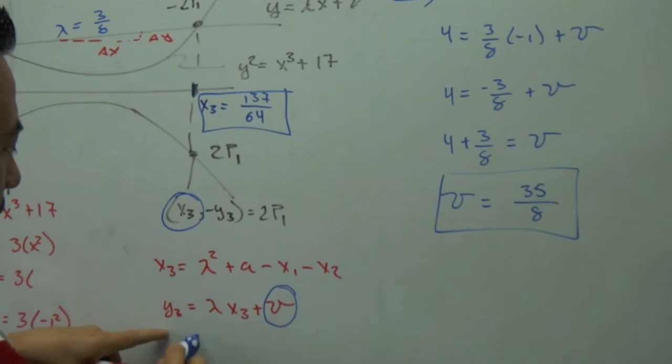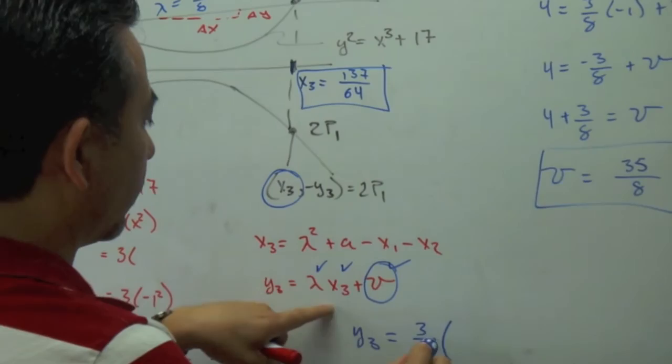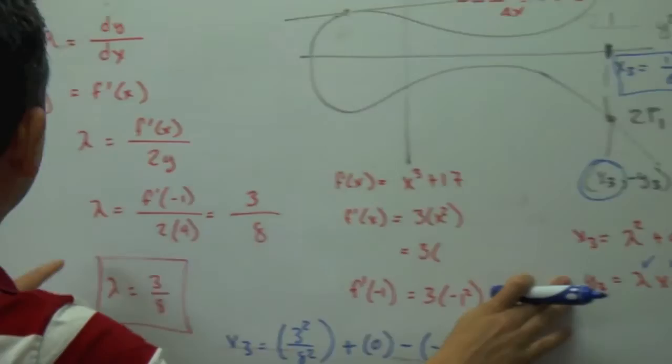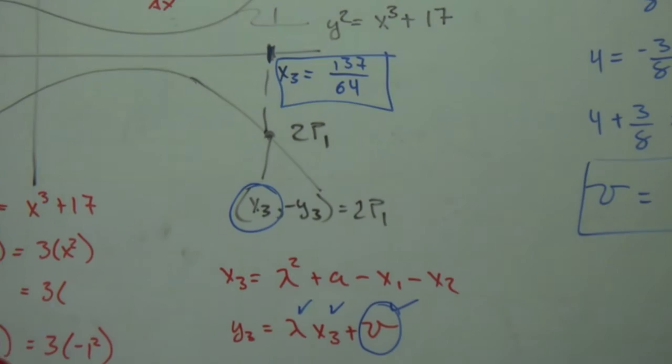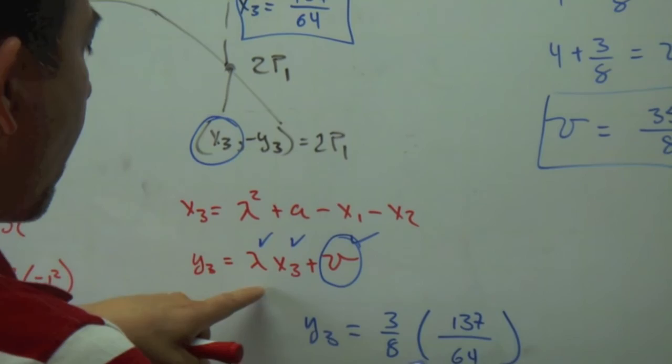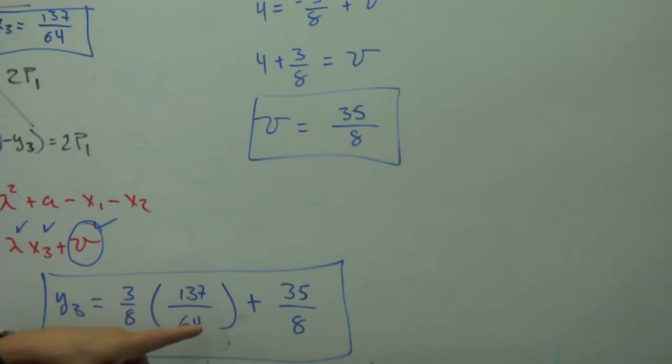So y3 equals lambda, which was 3 over 8, times x3, which equals 127/64, plus 35/8. This is punching the numbers into the calculator, but this is going to be 64 times 8, that's 512.